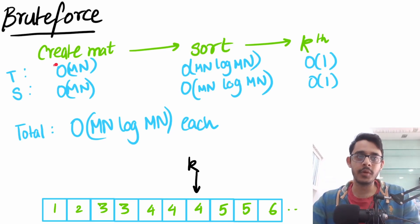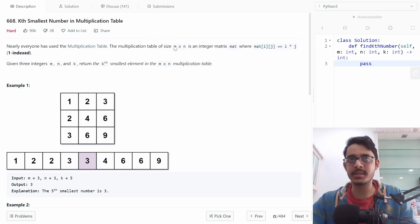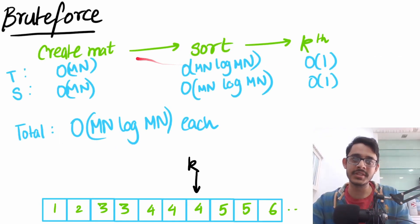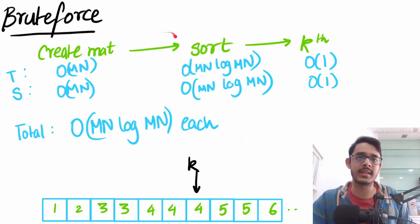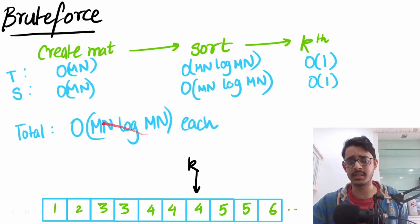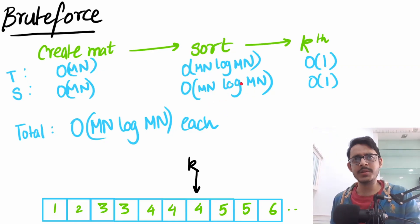For the brute force solution, the first step is to create the matrix. Note how the question doesn't give you the matrix — it only gives you dimensions m and n, so we must create it ourselves by iterating over all values. Once we have the matrix, we sort all elements, taking O(mn log mn) time and space. Finally, finding the kth element is O(1). The total complexity is O(mn log mn).